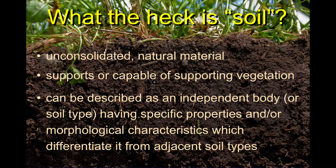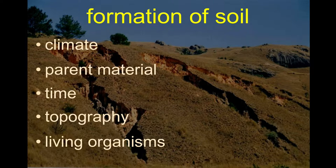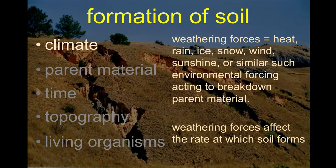Where does soil come from? It ultimately comes from stuff that breaks down more contiguous material into smaller pieces — weather in the form of heat, freezing ice, and water erosion. All those different things act to break down the parent material, whatever that is.